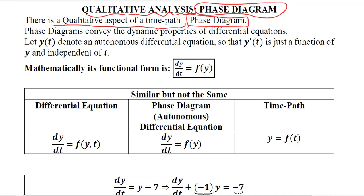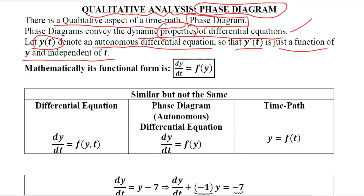The phase diagram conveys the dynamic properties of a differential equation. We will be understanding the dynamic properties of the differential equation we are dealing with. That is, if we have a certain function y as a function of time, it will be an autonomous differential equation, so that the derivative of that function is just a function of y and not a function of t. Mathematically, the derivative is only dependent upon y and not t, where t is the independent variable.